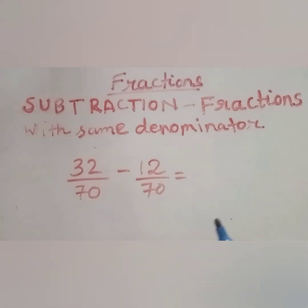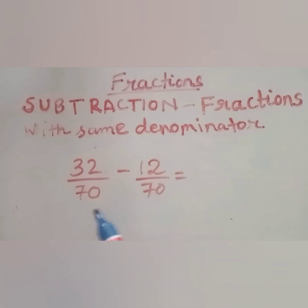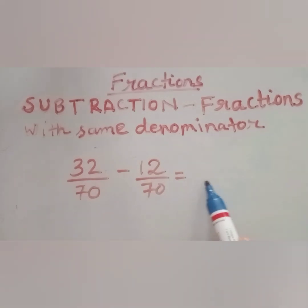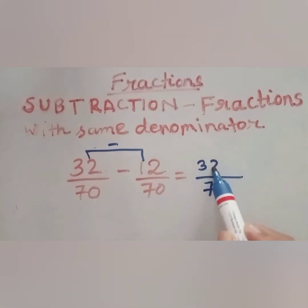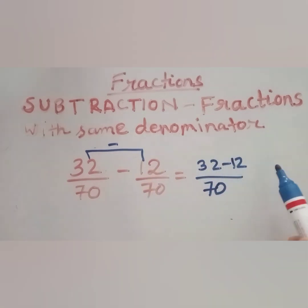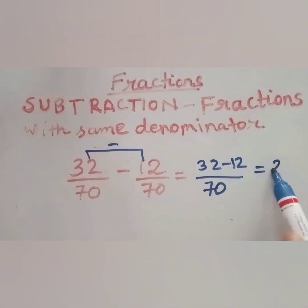Let us take another example of subtraction where the denominator is same. Here we see 32 by 70 minus 12 by 70. The denominator in both fractions is same, that is 70. So first we write 70, then we subtract the numerators: 32 minus 12 is 20 by 70.